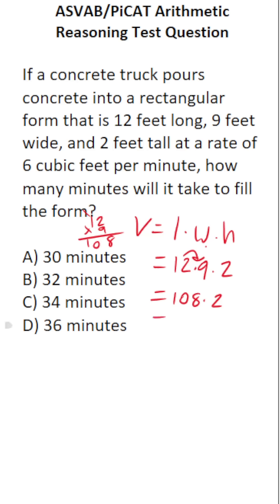And now let's do 108 times 2. If you can't do that mentally, do it off to the side. We have 108 times 2. 8 times 2 is 16, carry a 1. 0 times 2 is 0, plus 1 is 1. 2 times 1 is 2. So it's 216. In other words, this rectangular form or mold has a volume of 216 cubic feet.